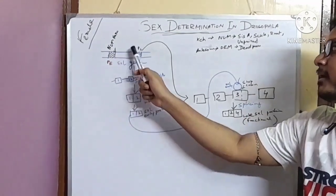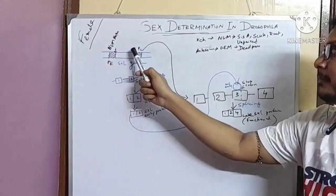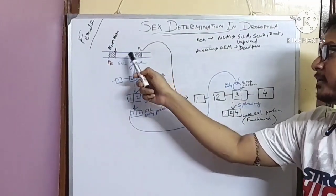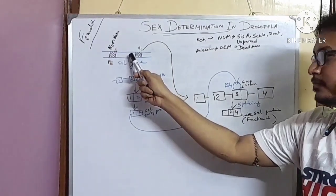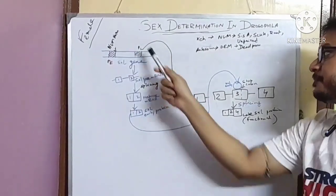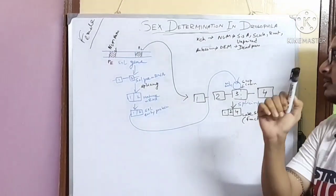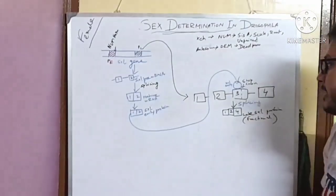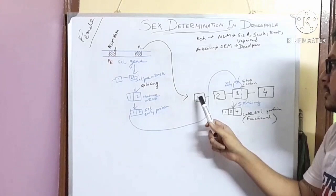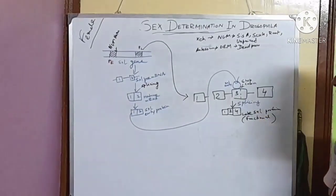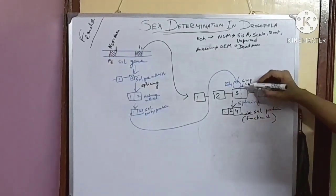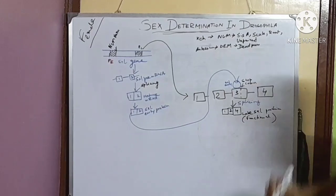Later, what happens? The lead promoter is active. After that, the lead promoter becomes activated and it produces another mRNA that has a stop codon at the third exon region.